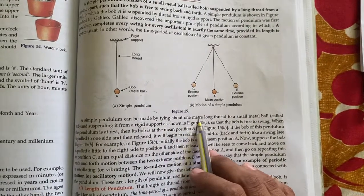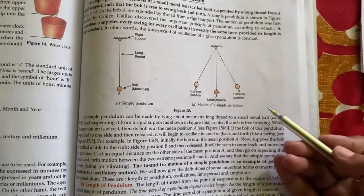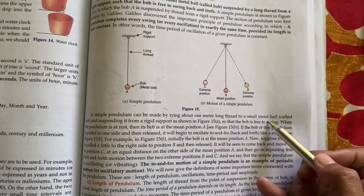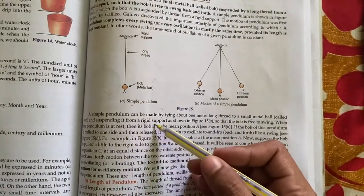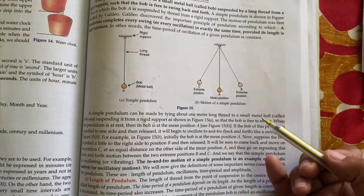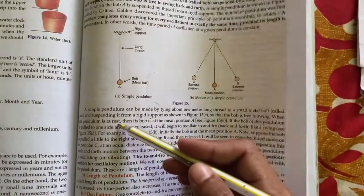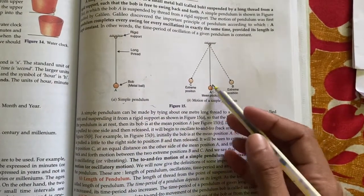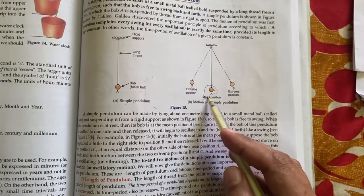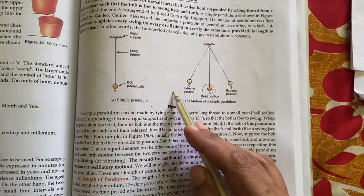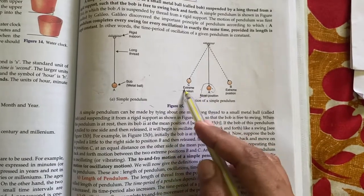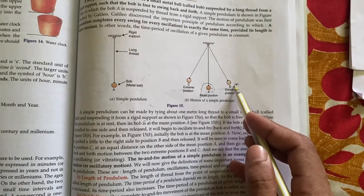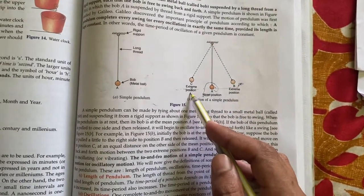About 1 meter long thread, using a small metal ball, take a rigid support. The bob is free to swing. Then firstly, the pendulum rests at the mean position. The pendulum is pushed, it moves to the extreme position, then back to extreme position.